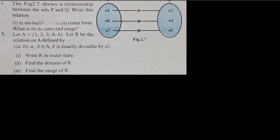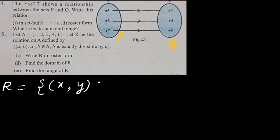Question 4: An arrow diagram is already given. We have to write the relationship between set P and set Q — both in set builder form and roster form — and then write the domain and range. Set P and set Q are shown; the arrows indicate which elements are related.